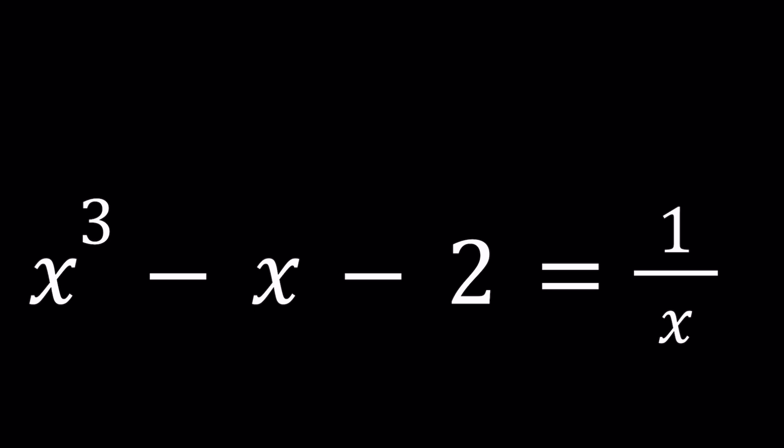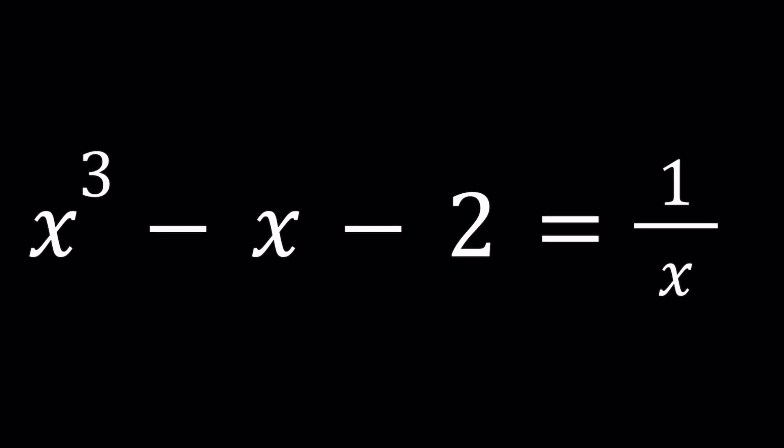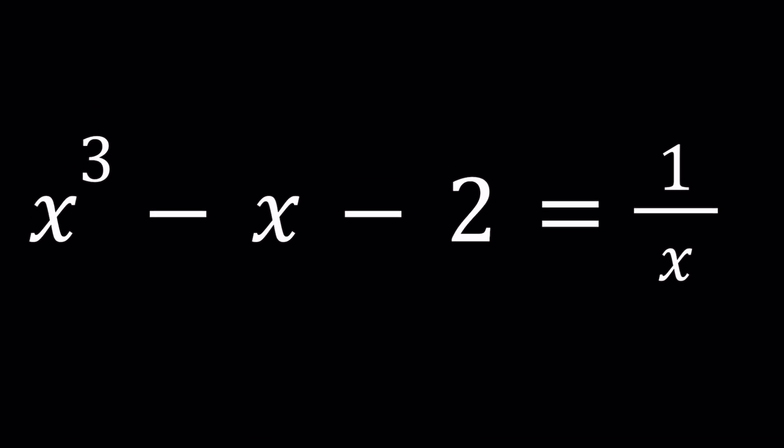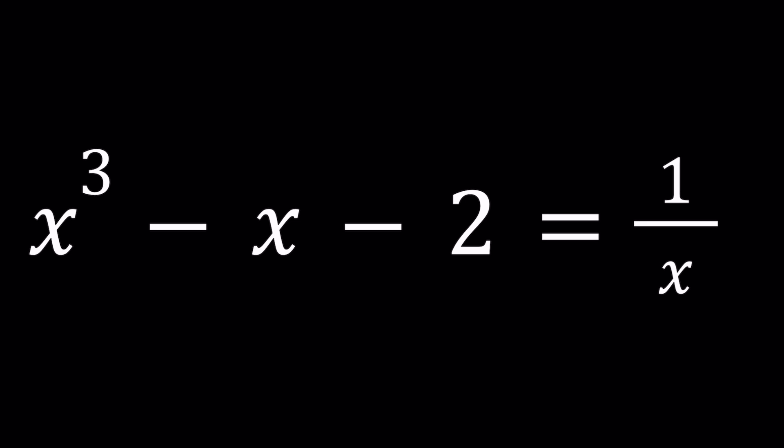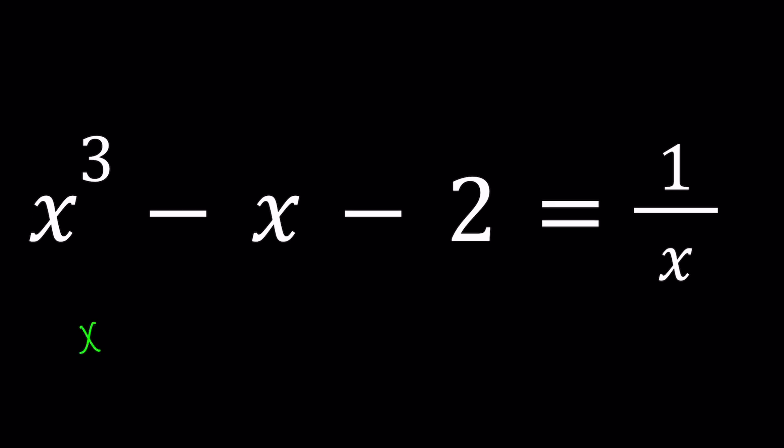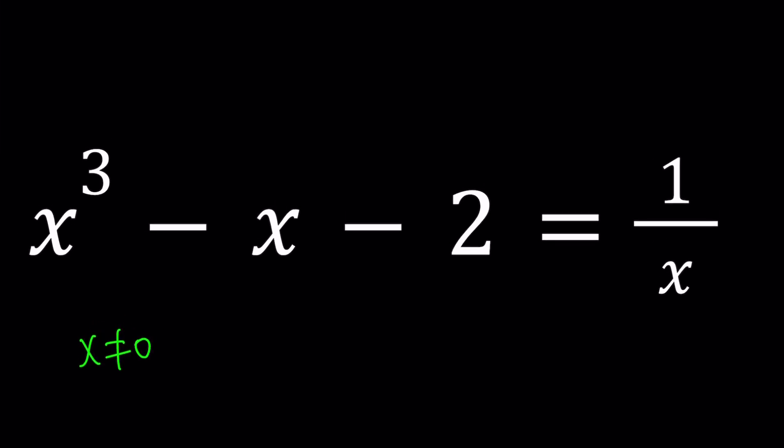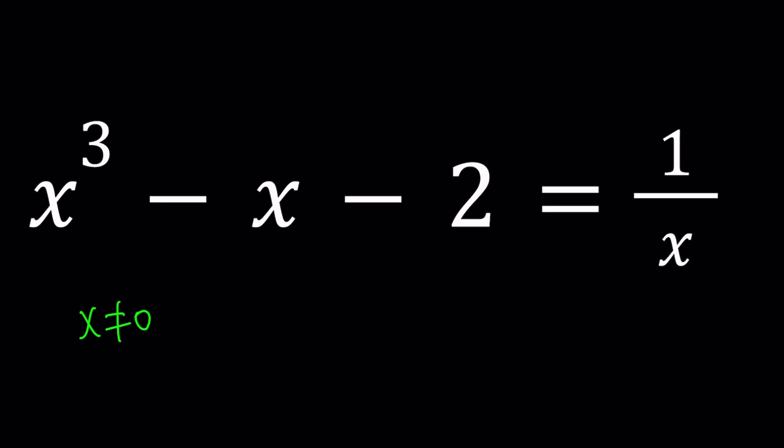First of all, we need to talk about the domain - which x values can be solutions and which cannot. There's only one exception, and that is x equals 0. Because at x equals 0, the right-hand side is undefined. If x equals 0, the left-hand side gives us negative 2. We need to make sure x does not equal 0.